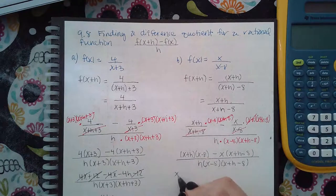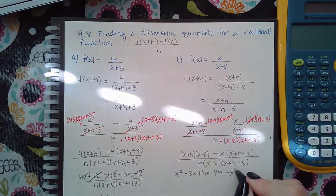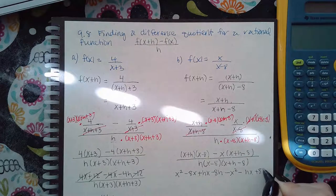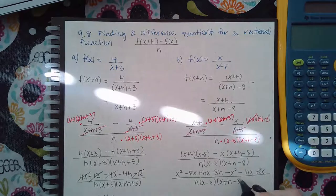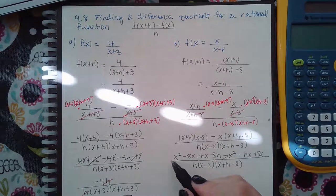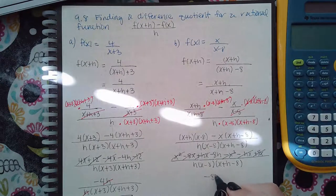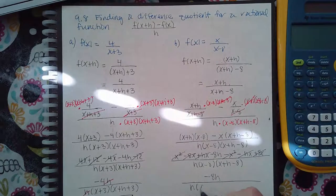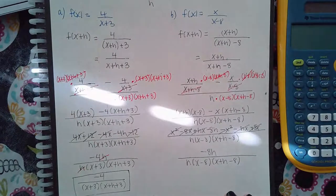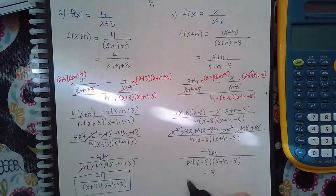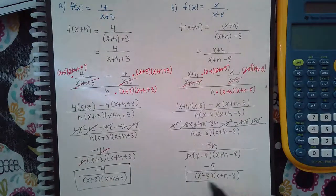I multiply out to get x squared minus eight x plus hx minus eight h, then distribute the negative to get negative x squared plus eight x minus hx plus eight x, all over h times x minus eight times x plus h minus eight. Canceling: negative x squared with positive x squared, negative eight x with positive eight x, and positive hx with negative hx. I'm left with negative eight h, so after the h's cancel, the final answer is negative eight over x minus eight times x plus h minus eight.